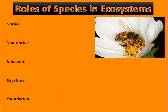Let's talk about the roles of species in ecosystems. Native species are species that normally live and thrive in a particular ecosystem — they're the ones that are normally there and have well-established niches. A non-native species is also referred to as an invasive species, an alien species, or an exotic species — basically one that may not belong.